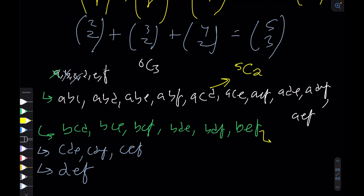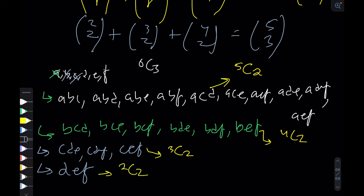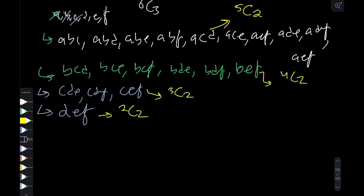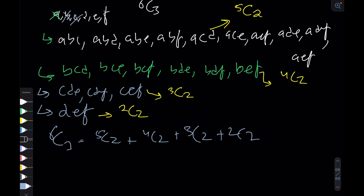The second group — all combinations not containing a but containing b — means from the remaining four I'm choosing two, so that's 4C2. By similar logic, not choosing a or b and starting with c gives 3C2, and finally we reach 2C2 and stop. In other words, we've shown that 6C3 equals 5C2 plus 4C2 plus 3C2 plus 2C2, which is exactly what we wanted.